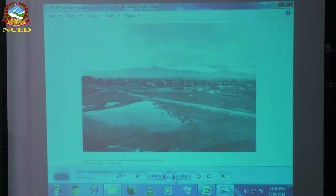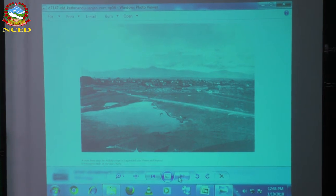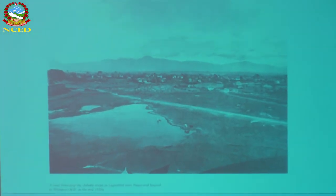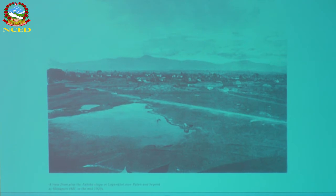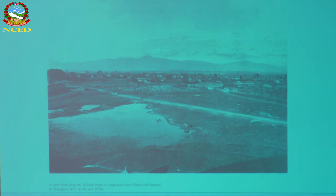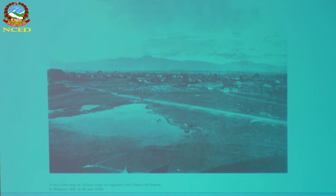Let me show you a few pictures on the screen. This is the picture of Kathmandu Valley — a very old picture. This is a view from atop the Asak Stupa in Lagan Khel. This picture was taken from Asak Stupa. This is the picture of Lagan Khel, near Patan. At the backdrop, you can see Sibapuri Hill. This picture was taken in the mid-1920s. You can see a pond, a road, and a few houses.